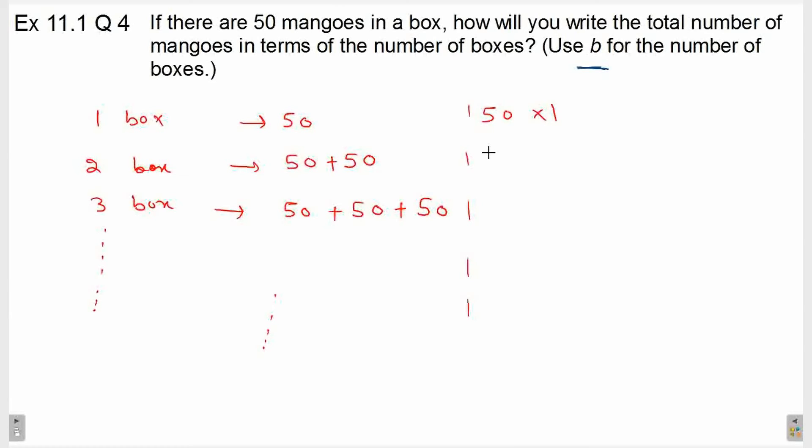So, 50 multiply by 1, 50 multiply by 2, 50 multiply by 3 and so on. इसको हम generic rule में कैसे लिख सकते हैं? अगर हमारे पास B number of boxes हैं, तो total number of mangoes कितने हो जाएंगे? 50 into B.